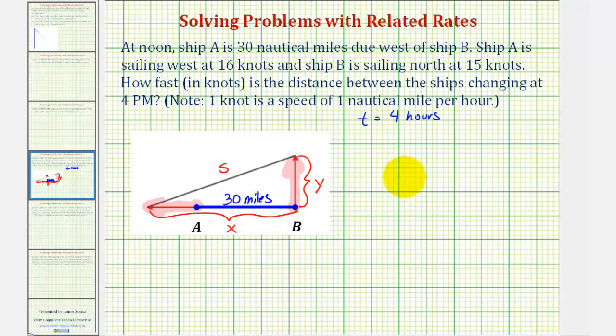Now, let's begin to list the given information. Because ship A is sailing west at 16 knots, X is changing at that rate, and therefore, dX/dt is equal to 16 knots.